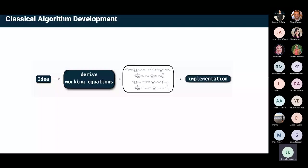We usually like to start from a computational perspective. My personal background is in classical algorithm development for quantum chemistry, so it's always a scientific computing point of view I'm taking. Usually there's something you want to do with the computer, then you derive working equations — equations which specifically tell the computer what to do — then you implement these equations and run the program. What the computer does for you is basically a bunch of arithmetic operations.